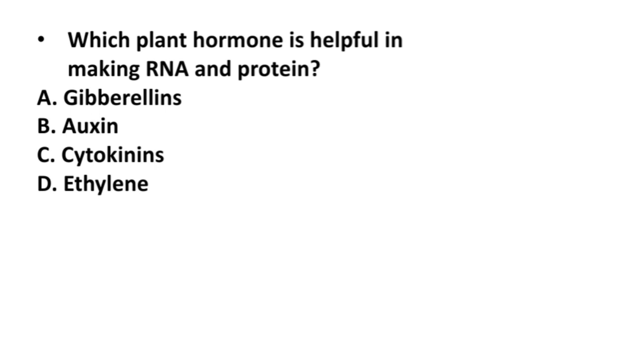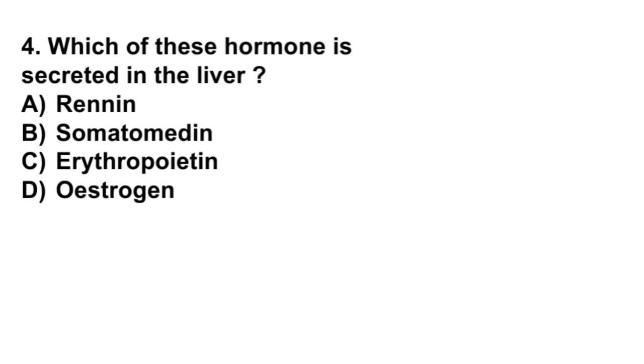Now next, which plant hormone is helpful in making RNA and protein? Gibberellin, auxin, cytokinin, or ethylene? Its correct answer is option C, cytokinin.